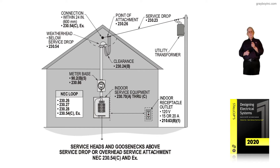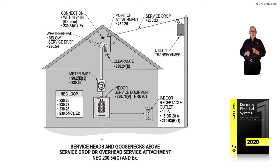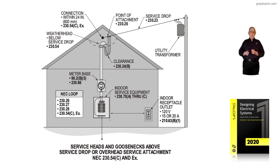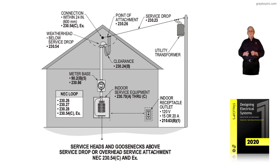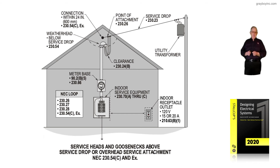A lot of times you'll see it 24 inches to the right, to the left, or above the attachment point, in accordance with the authority having jurisdiction. Notice we may have a receptacle located outside within 25 feet that's GFCI protected. NEC 210.63B1 now says if the panelboard is indoors, we have to have the receptacle; if it's outdoors, it doesn't call for it.